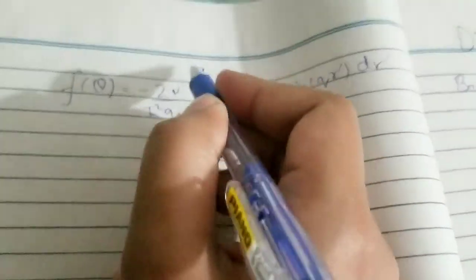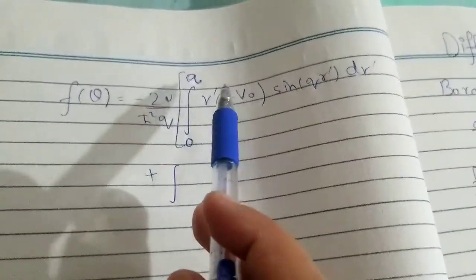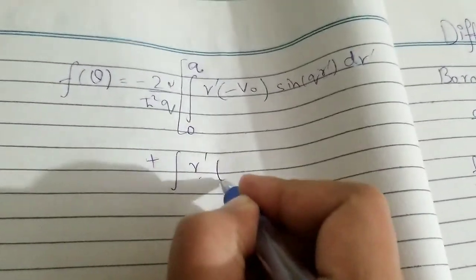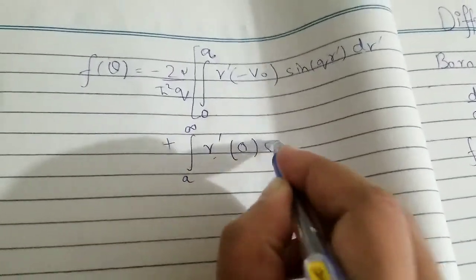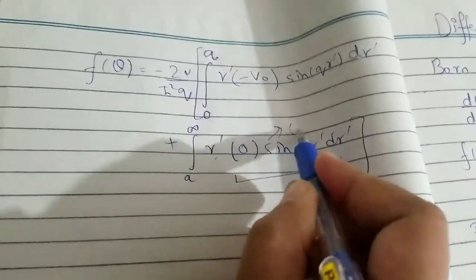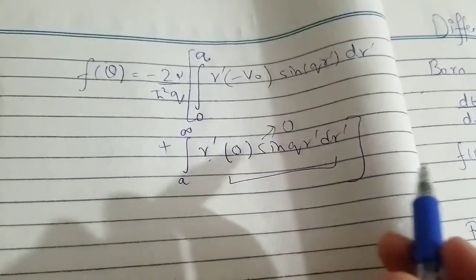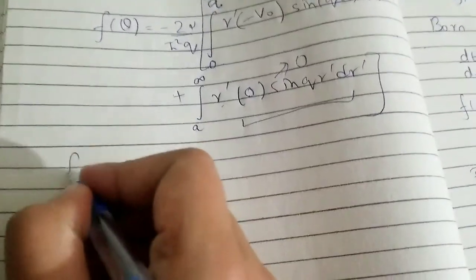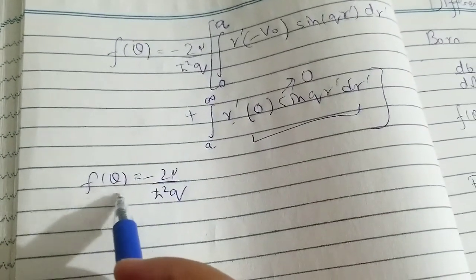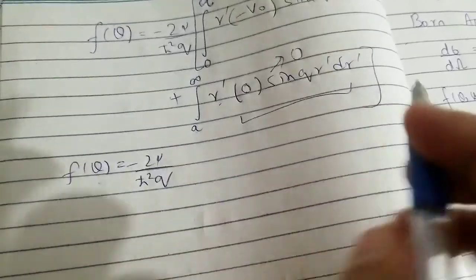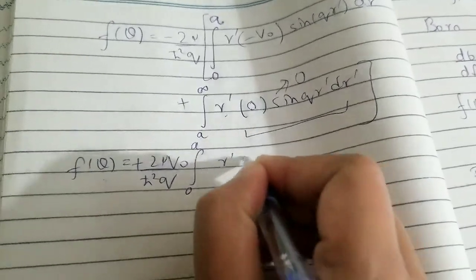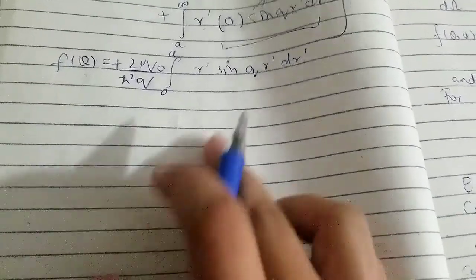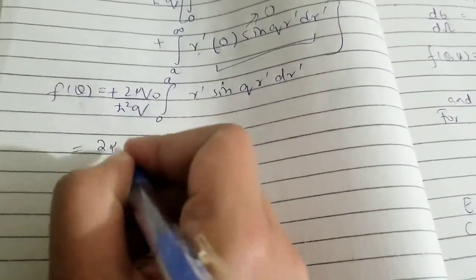At the end we take the square modulus of the scattering amplitude to get the differential cross-section. It's better to first simplify the expression and then take the square. The minus sign comes out and becomes plus, V-naught comes out as a constant, and we are left with the remaining integral. Now we have to solve this integral using integration by parts.